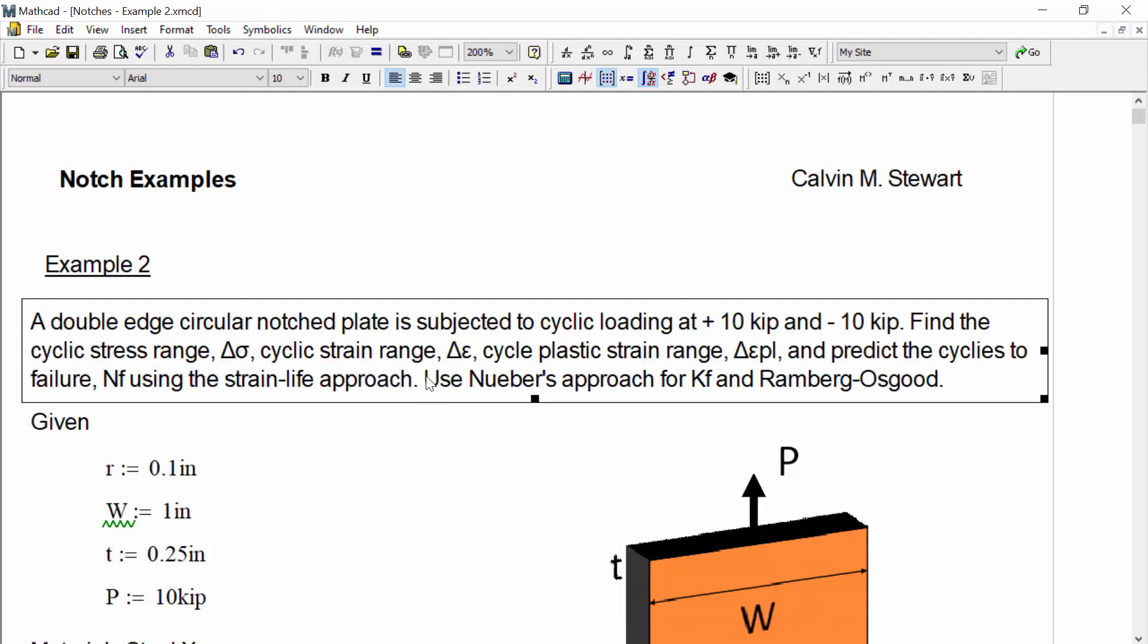We're told to use Neuber's approach for finding the fatigue stress concentration factor KF and to use Ramberg-Osgood's relationship.